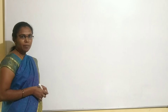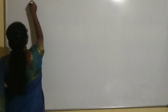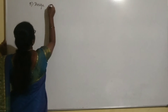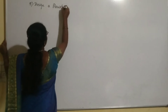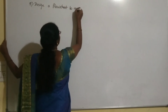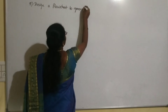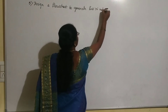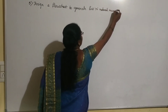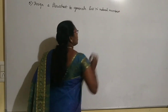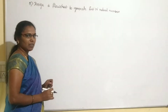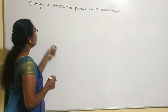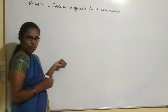Now we go to the next problem — the fifth one: design a flowchart for the first N natural numbers. In the algorithms class I explained this fifth problem. Now we are designing the flowchart. Observe here.